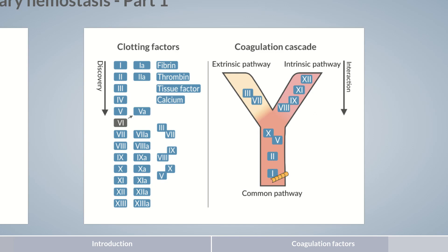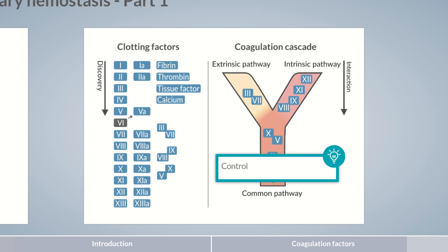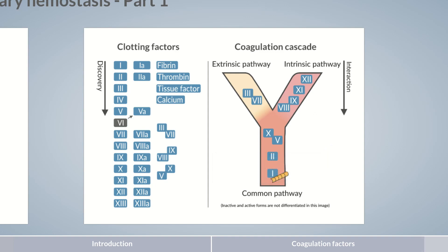Putting aside this disarrangement in numbering, the principle of coagulation is actually quite clever. Most factors are proteases, and each factor activates downstream factors. The result is a gradual activation — a cascade. There are two advantages to this type of activation: it enables the precise control of coagulation on different levels, and also allows for a sudden increase, or chain reaction. To keep it simple, in this and the following images, we won't show the difference between inactive and active clotting factors.